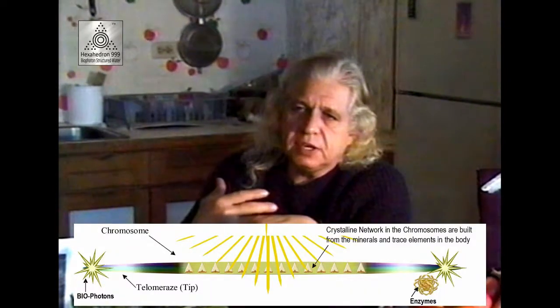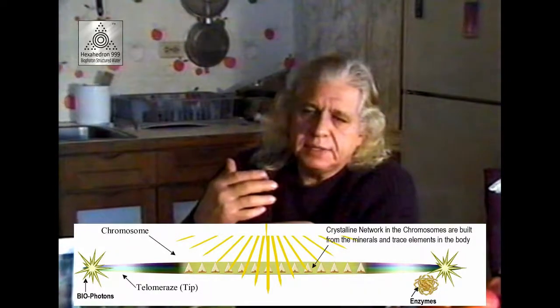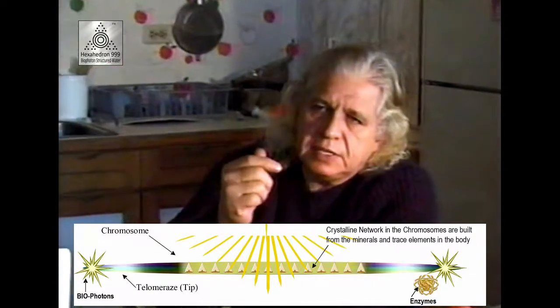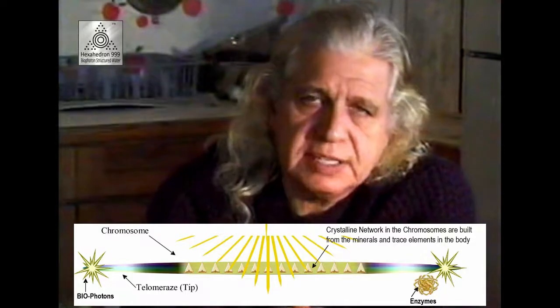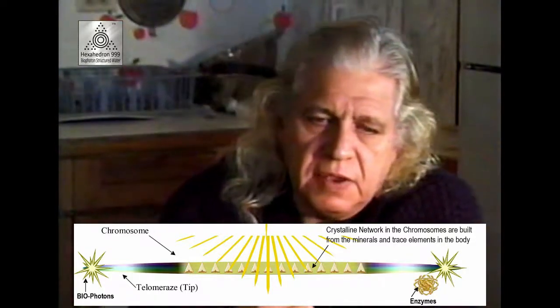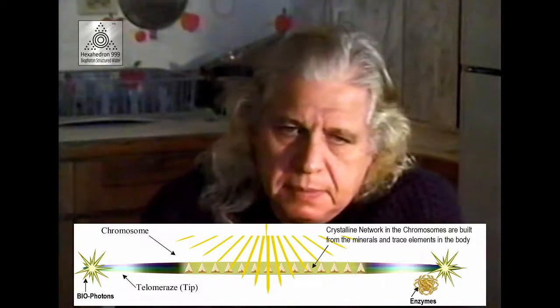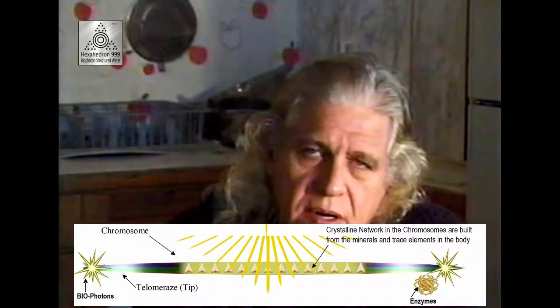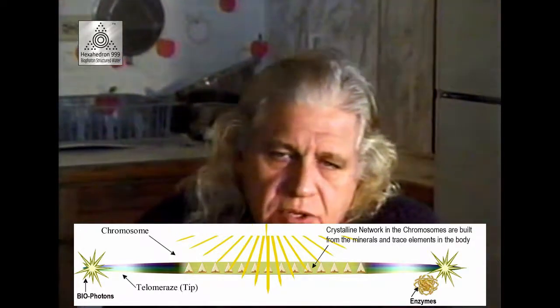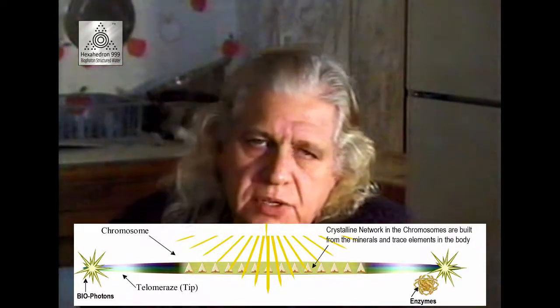As light comes in through the chromosome and is released to the crystalline network and to the telomeres, the small light radiated is an electromagnetic frequency — the silent language of the DNA. It gives information to enzymes for their magnificent and great work within the cellular network. This electromagnetic frequency also activates, guides, and directs intracellular activities.